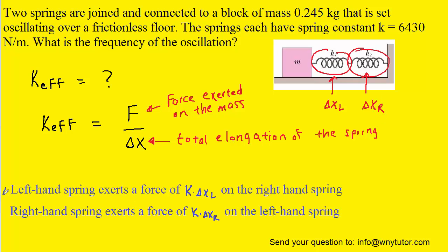The following two key ideas will hold: the left-hand spring is exerting a force whose magnitude would be k times delta x_L, according to Hooke's Law, on the right-hand spring. Similarly, the right-hand spring is exerting a force of k times delta x_R on the left-hand spring.